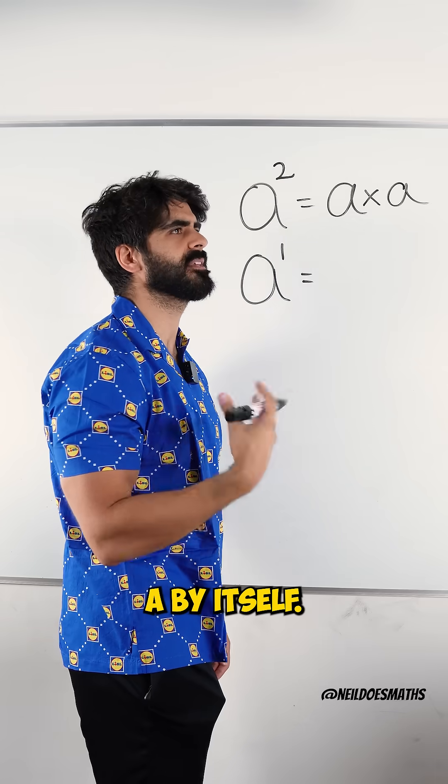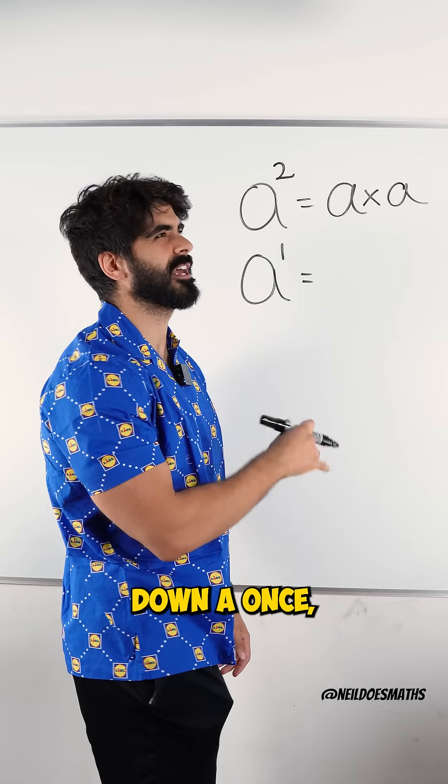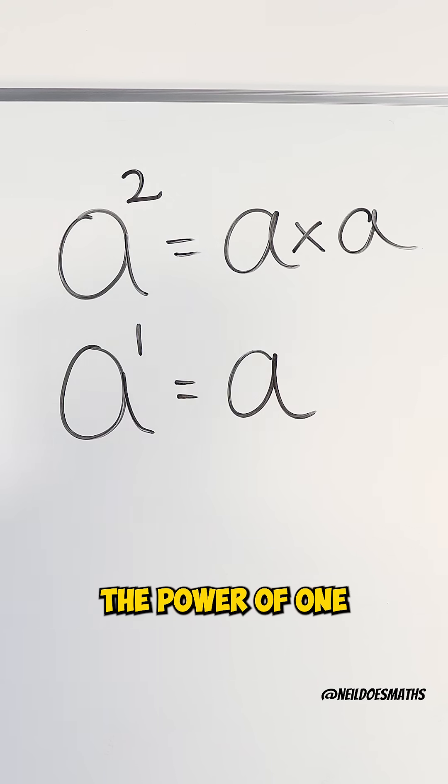Now, a to the power of one means you multiply a by itself, but you can only write down a once, which means anything to the power of one is just itself.